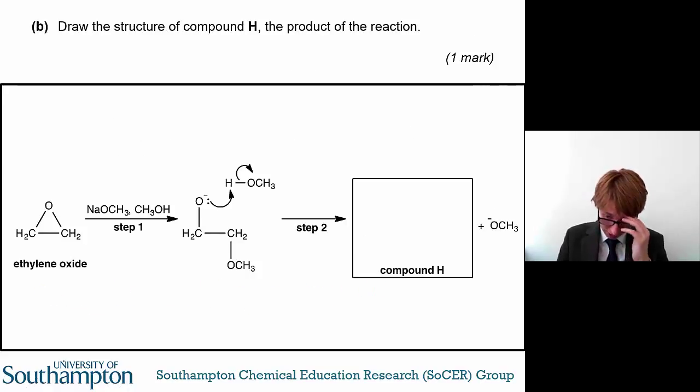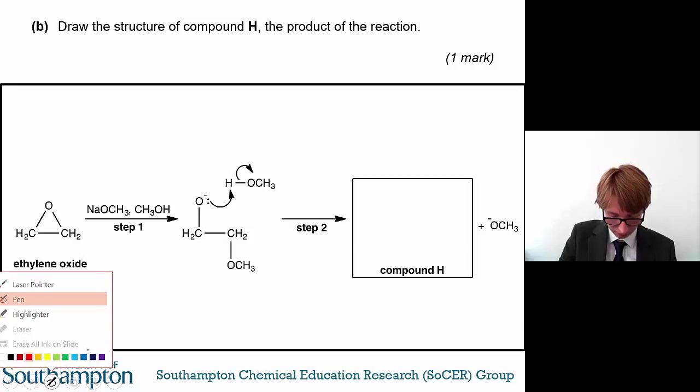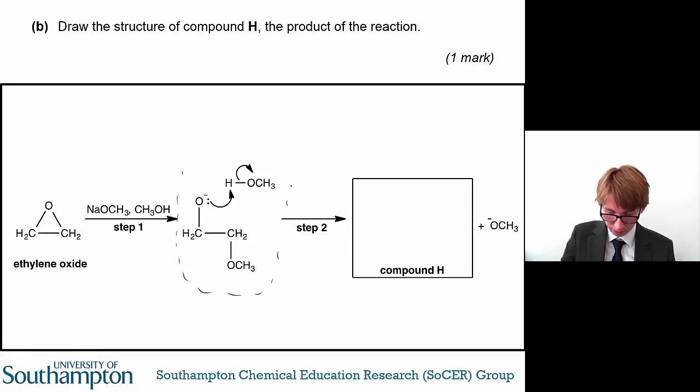So the tricky bit is from here on in. Draw the structure of compound H, the product of the reaction. So you can see here in step two, this mechanism occurring. So you can see that this oxygen atom, sorry, I should say ion, it's got a negative charge on it, it's currently showing the movement of electrons to form a bond to this hydrogen atom, and then this pair of electrons from the hydrogen-oxygen bond, so the bond breaks, and this pair of electrons is going to the OCH3 group. So you can see that being formed here, so now it's a negatively charged group because the pair of electrons have moved on to there.